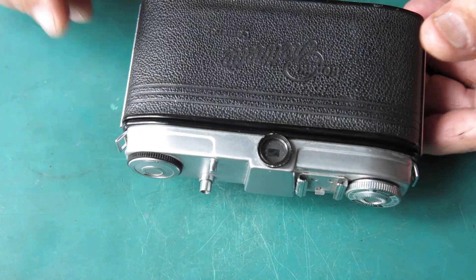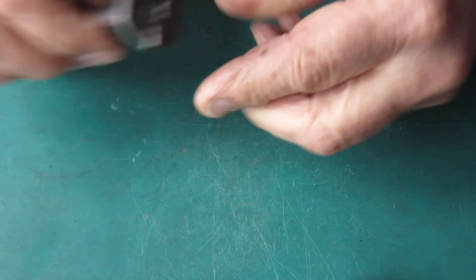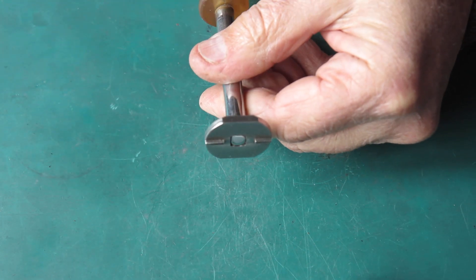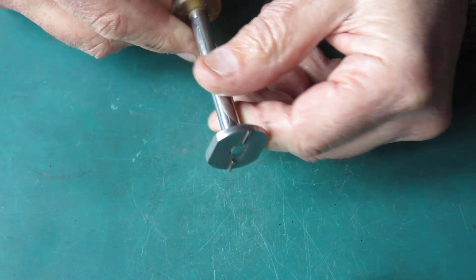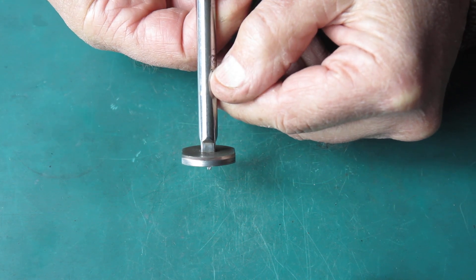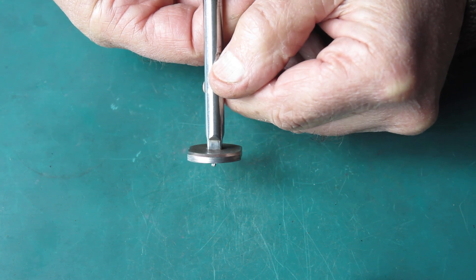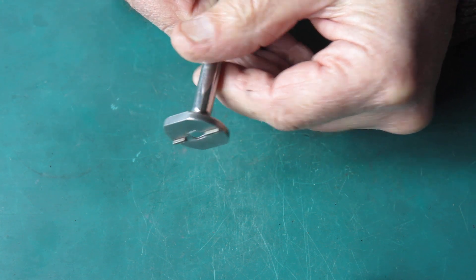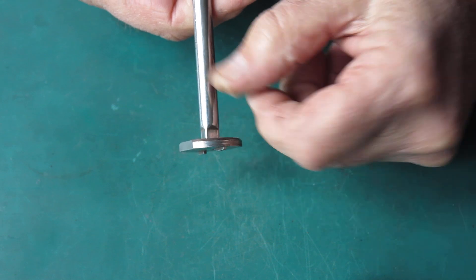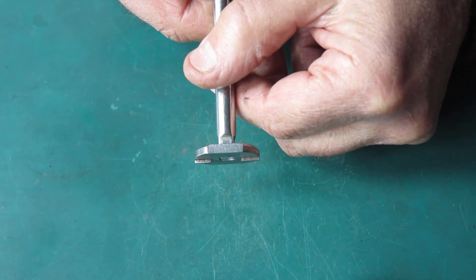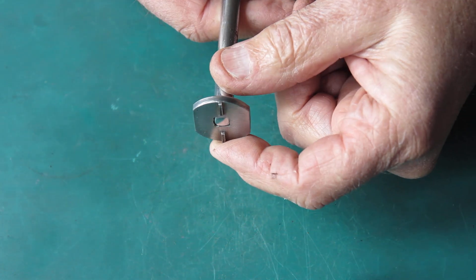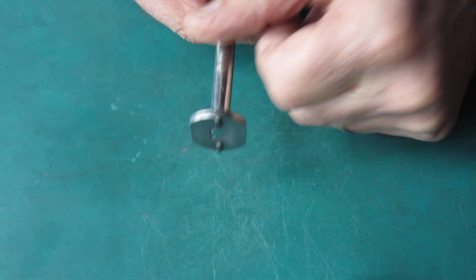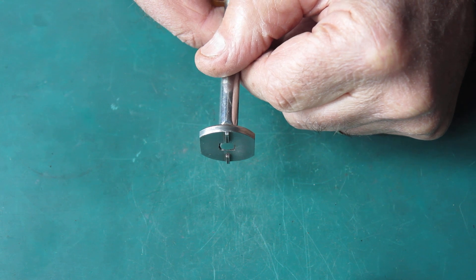And the tool we need is something like this. As you can see, it's flat, narrow enough to pass through the film gate, thin enough this way to pass underneath that obstruction, and with two lobes here and here to engage the retaining ring.